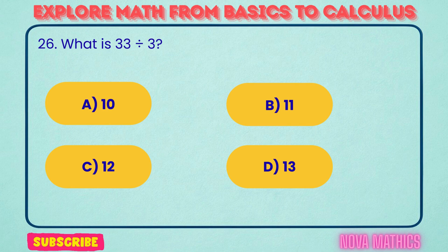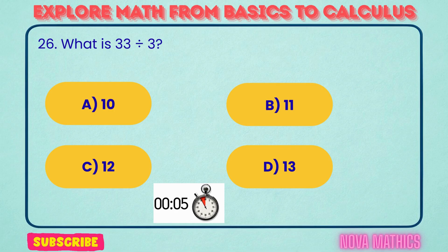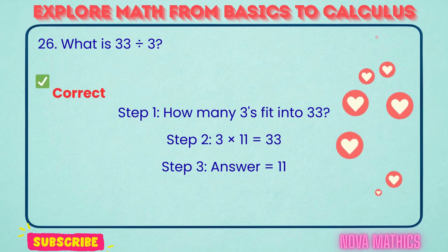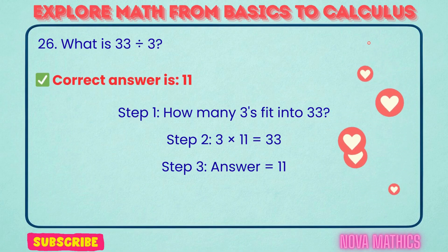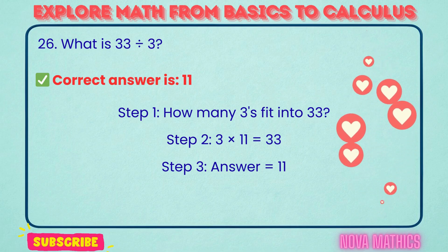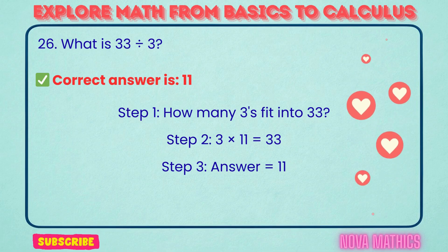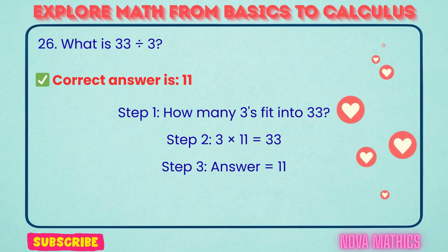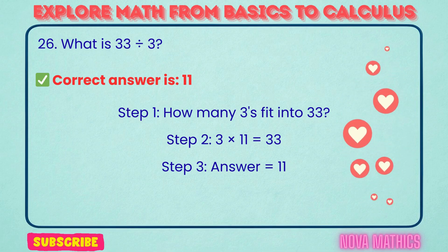26. What is 33 divided by 3? Correct answer is 11. 33 divided by 3 equals 11. We find this because 3 times 11 is 33.